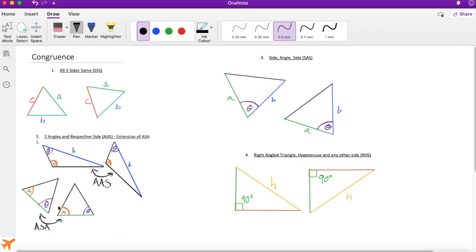The less powerful version of this rule is angle-side-angle. But this is more powerful because it could be two angles and a respective side. It could be this angle, this angle and this side, or this angle, this angle and this side.